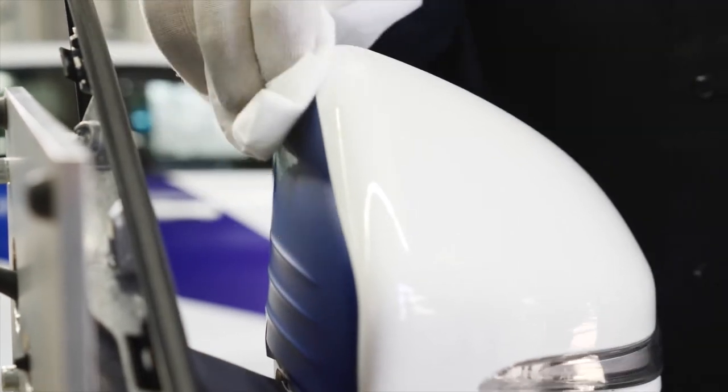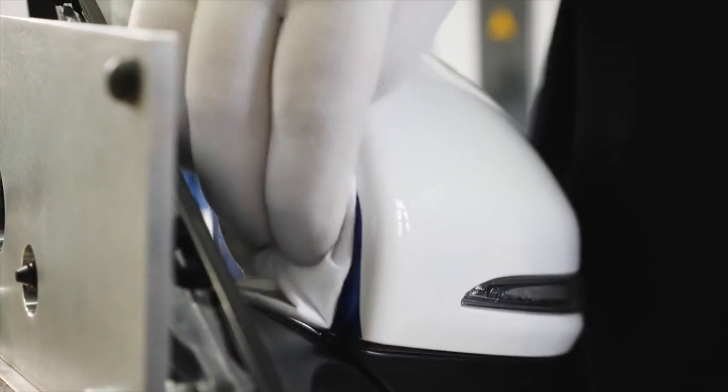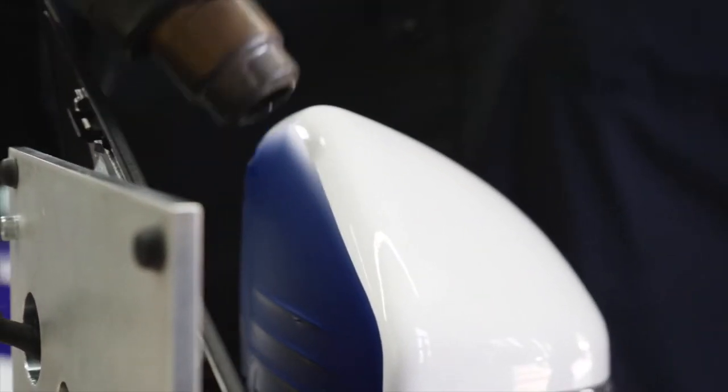Before applying the second piece of film, clean the edge of the first applied film with 3M Surface Preparation System. Remove any traces of solvent with heat.